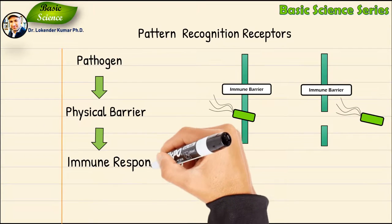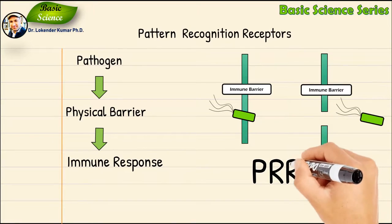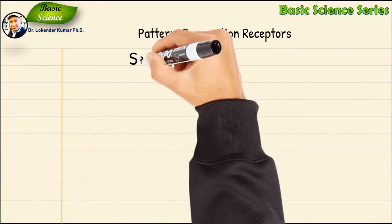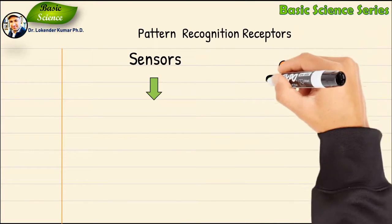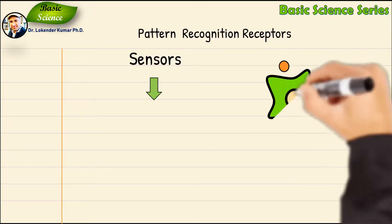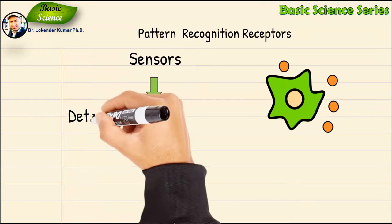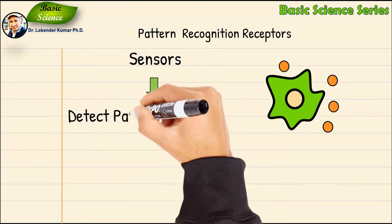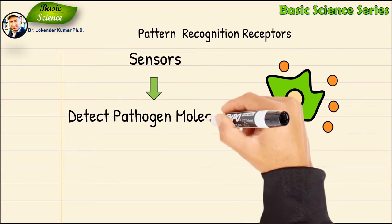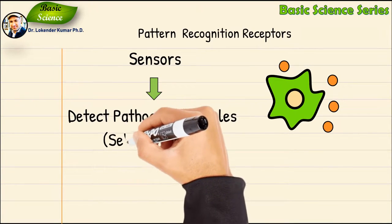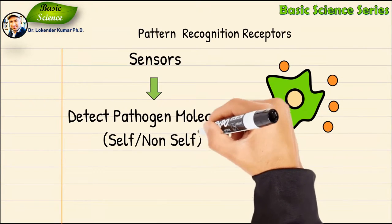Pattern recognition receptors, in short PRRs, are our sensor machines which detect molecules typical for pathogens. Remember, cells do not have sensory organs like eyes or ears to detect foreign things. They have sensors that can differentiate between self and non-self, and these sensors are known as PRRs — pattern recognition receptors.